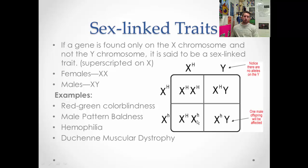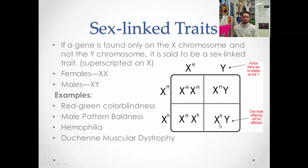That's why men are more likely to be colorblind, more likely to go bald, and more likely to be hemophiliacs — all they need is one copy of the gene. Females need two copies; she'd have to be X^h X^h, getting it from both parents. A male gets his X-linked allele only from his mother, since dad gives him the Y chromosome.